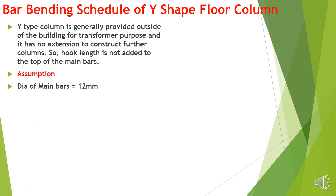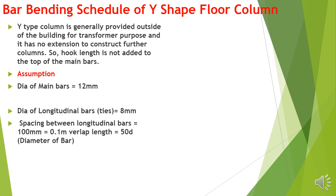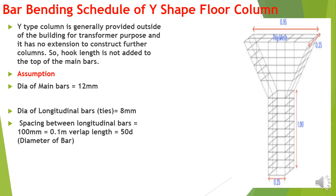Assumptions: vertical main bars are 12 mm. All the longitudinal bars, that is the ties or stirrups, are 8 mm. Spacing between the stirrups or longitudinal bars is 100 mm center to center, and overlap length is 0.1 meter, that is 50D of the diameter of the bar. This is the image of the Y-shaped column.